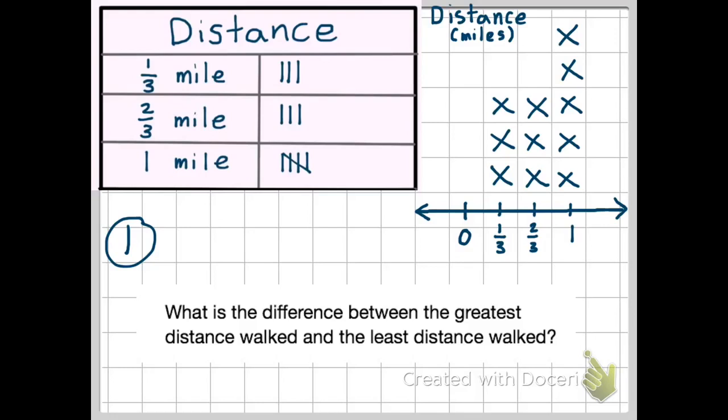So your first question is, what is the difference between the greatest distance walked and the least distance walked? Remember that there weren't any days where they didn't walk at all, so you want to just find the least that they did walk.